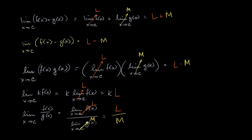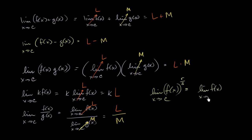Finally, we'll look at the exponent property. The limit of f of x to the r over s power as x approaches c — where both r and s are integers and s is not equal to zero — is going to be the exact same thing as the limit of f of x as x approaches c, raised to the r over s power, which equals L to the r over s power.